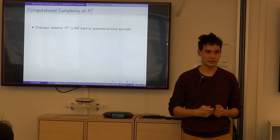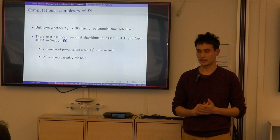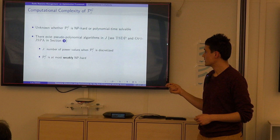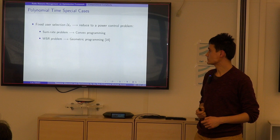Regarding PC with cellular power constraint, we don't know if it is NP-hard or polynomial-time solvable. However, there exists a pseudo-polynomial algorithm in J, where J is the number of power values when the problem is discretized. Since this algorithm exists, if the problem is NP-hard, it can only be weakly NP-hard at most. Nevertheless, we show that it is approximable — there exists a Fully Polynomial Time Approximation Scheme (FPTAS) that we present in Section 4.